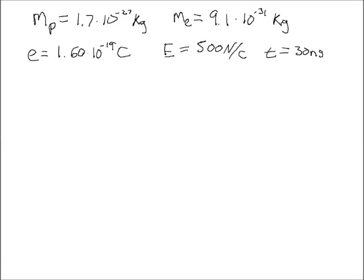This is an example problem similar to problem 53 in chapter 23 of the Serway text. In this problem we have both a proton and an electron placed in a uniform field of strength 500 newtons per coulomb. We're asked to find the speed of both the proton and the electron after they have been in that electric field a time t equals 30 nanoseconds.